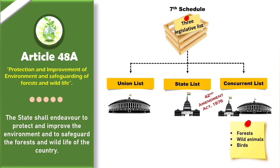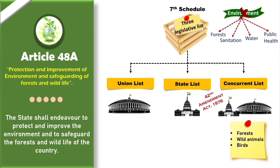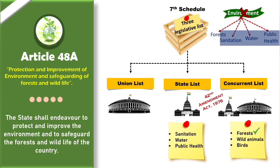One more important point: the word 'environment' itself has not been mentioned anywhere in these three lists. However, environment is associated with forest, sanitation, water, public health, etc. So whenever a law has to be made to improve the environment, all these things are taken into consideration. The subject of forest is mentioned in the Concurrent List, while subjects related to sanitation, water, and public health are included in the State List.